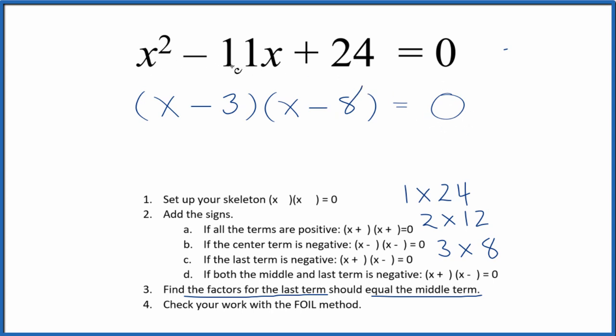We've factored the equation x squared minus 11x plus 24. We should check our work with the FOIL method, though.